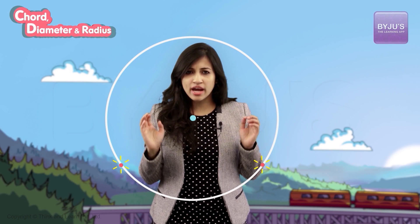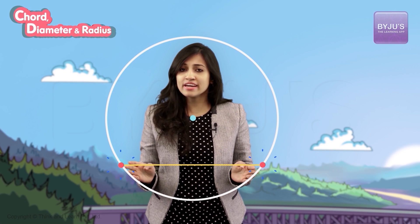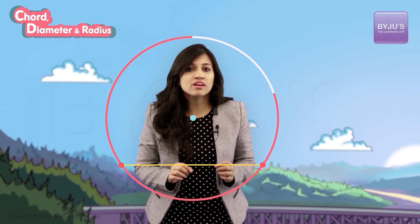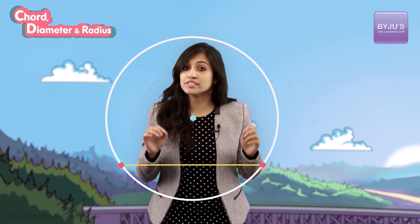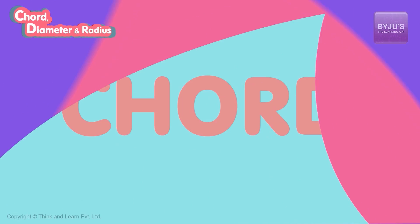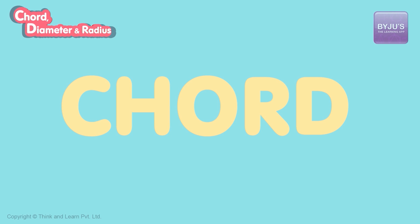I have a circle here. If I take two random points on the circle and join them using a line, it's a special line because it's inside the circle. And when something is special, we give it a name. We call it the chord of the circle.